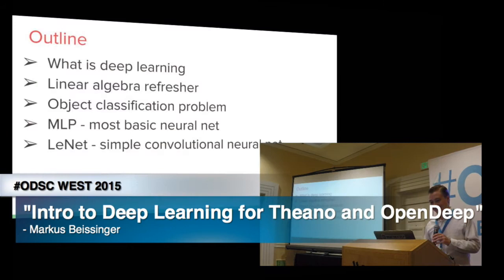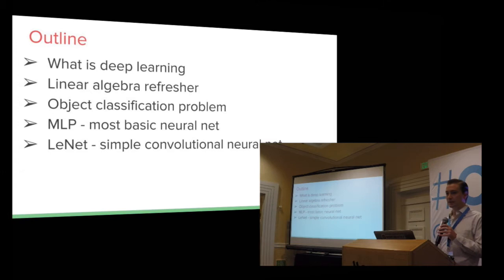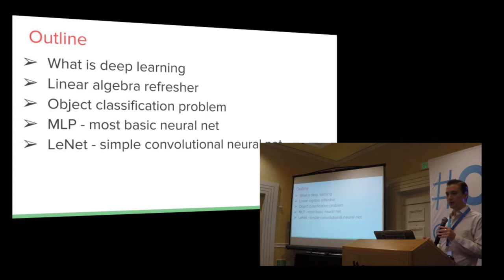A little outline of where we're going to go. We're going to first figure out what is actually Deep Learning compared to normal machine learning techniques. We're going to do a little linear algebra refresher because all of Deep Learning is just matrix multiplications. Then we're going to do object classification using the MNIST handwritten digits dataset. We're going to do two models: first a normal feedforward net, also known as a multi-layer perceptron, and then a simple convolutional net.